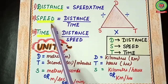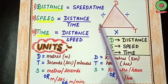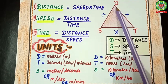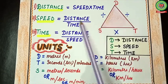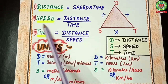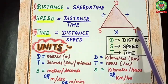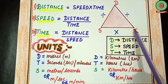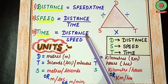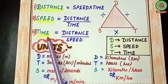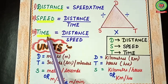Next, speed: opposite to speed in the triangle is D divided by T, so speed equals distance divided by time. For time: opposite to T is D divided by S, that means distance divided by speed, so time equals distance divided by speed. So here we have the three formulas for distance, speed and time.